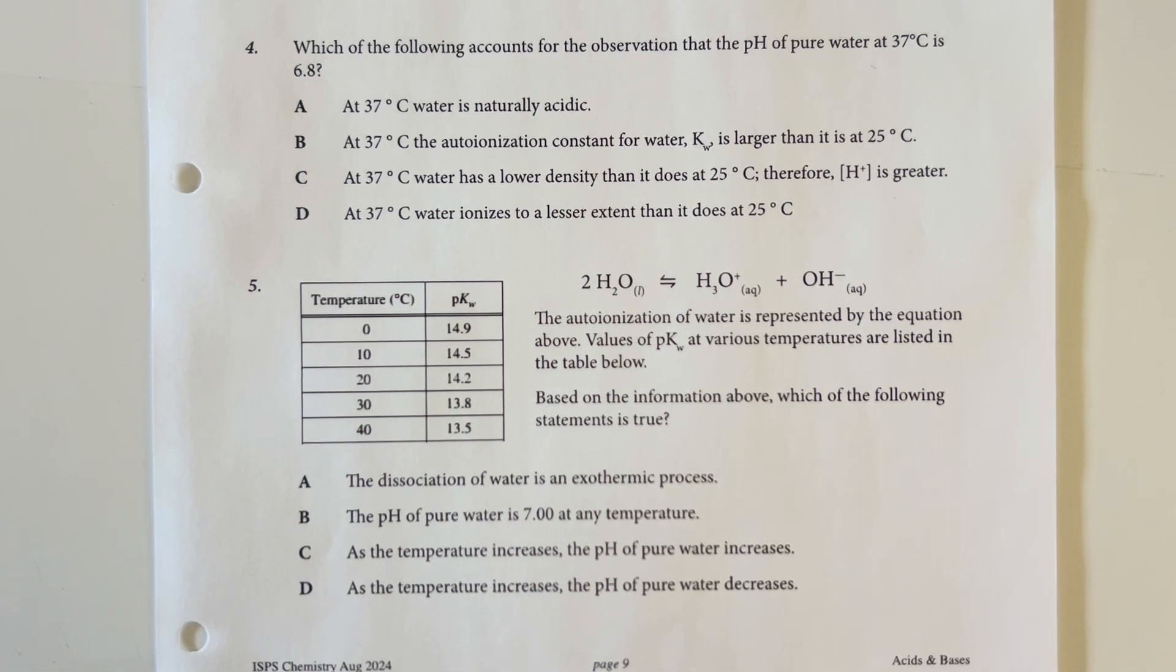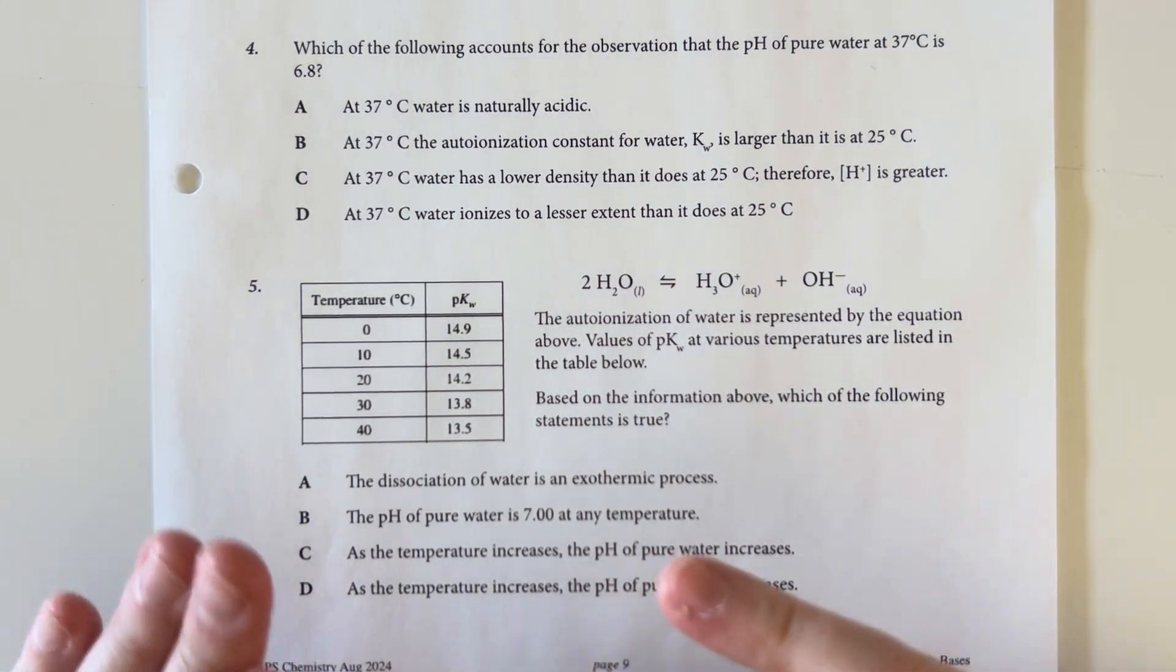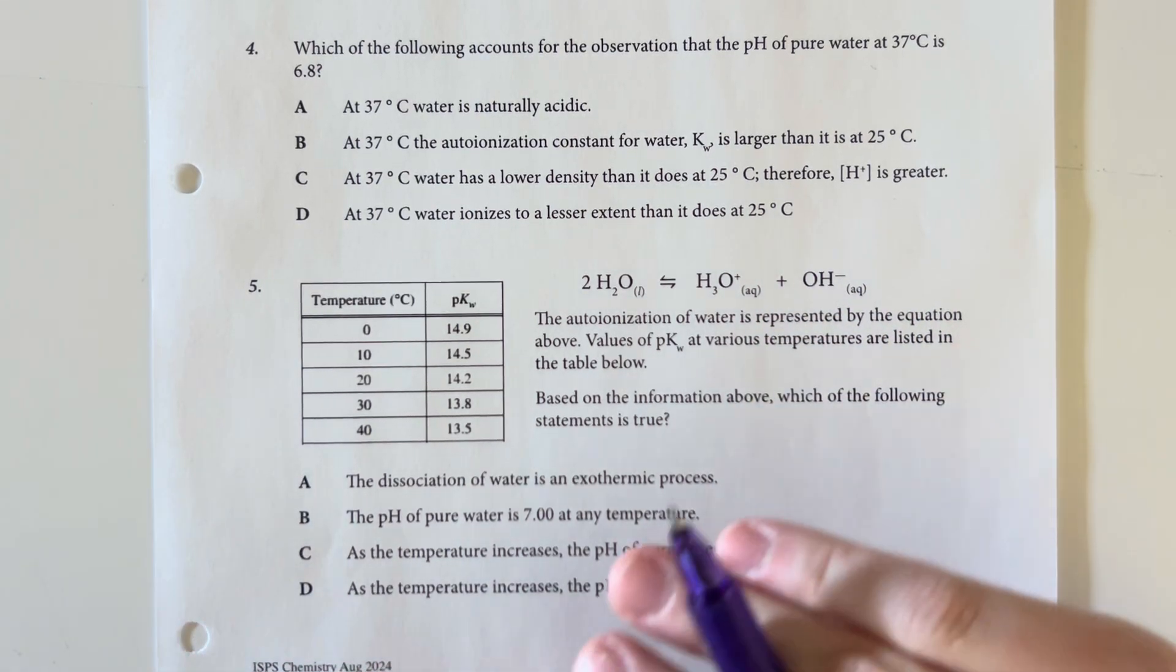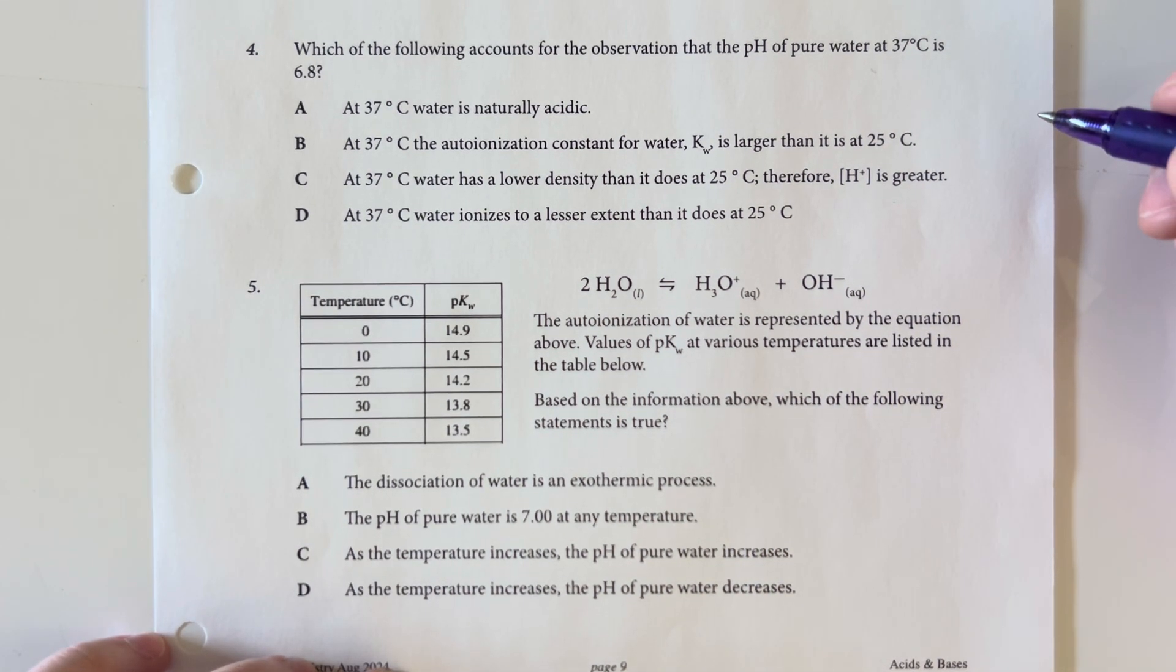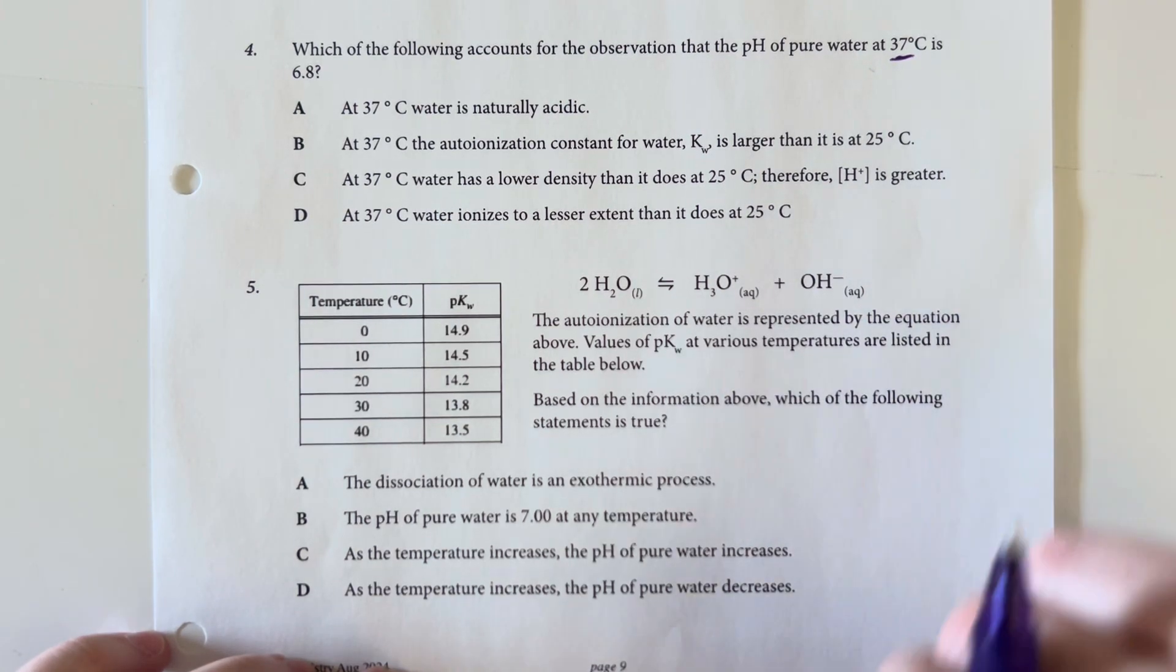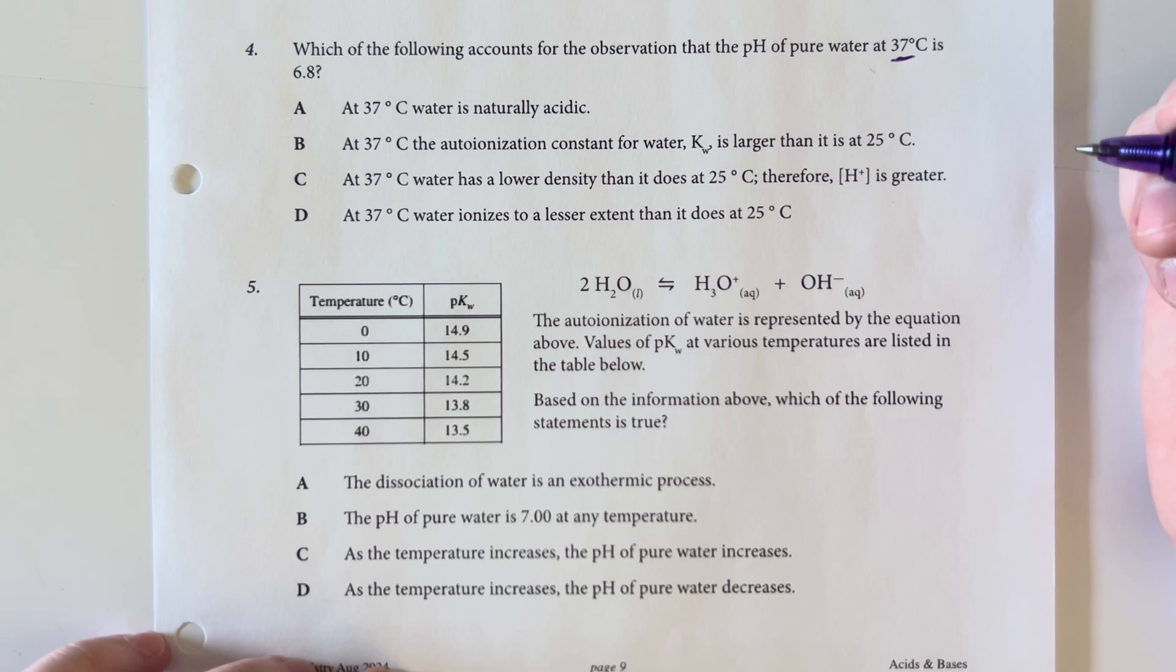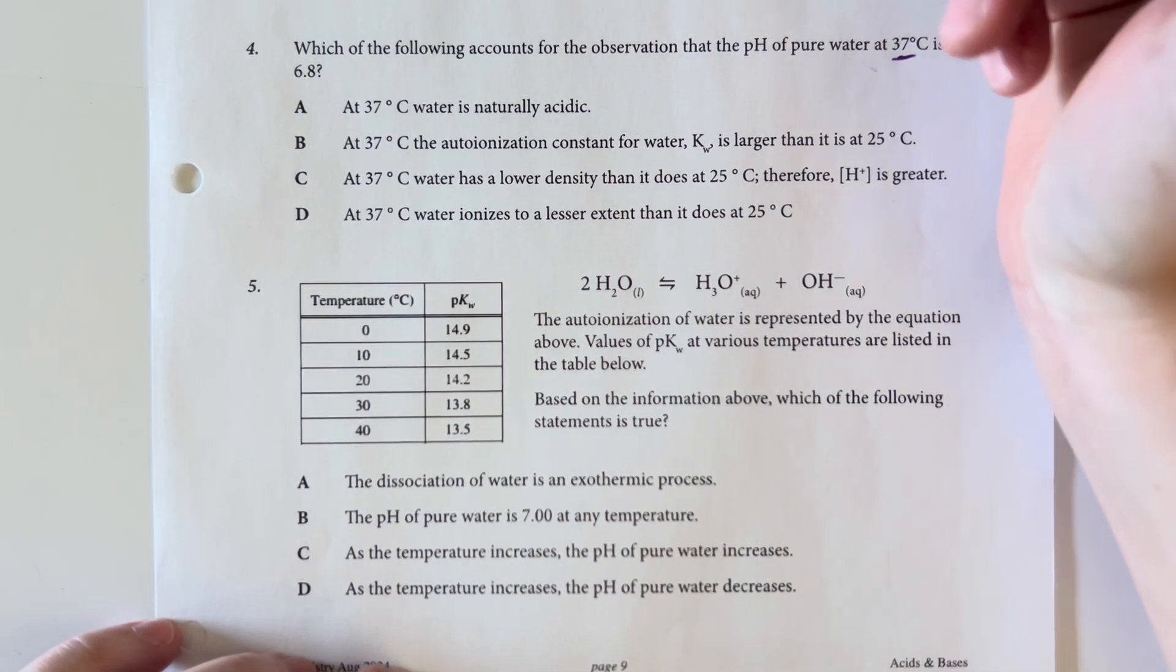Which of the following accounts for the observation that pH of pure water at 37 degrees Celsius is 6.8? So as we talked about, our water will dissociate further as we increase the temperature. And so pure water at room temperature will have a pH of 7, or perfectly neutral. And that just means that at 37 degrees, since we have a higher temperature, we're going to dissociate more, therefore have more hydrogen ions there. And so that means that our kW is going to be larger when our temperature is higher.